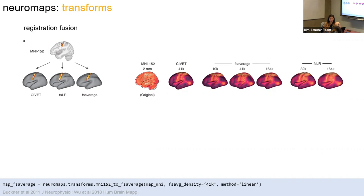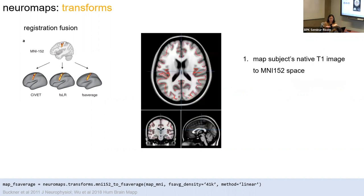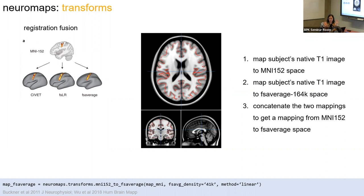To go from volume to surface we use registration fusion, first introduced in Buckner et al. 2011 and expanded in Wu et al. 2018 from Thomas Yeo's group. What they do is map each subject's native T1 image to MNI152 space and then map the same T1 image to FS average — in this case 164,000 vertices per hemisphere — then concatenate those two mappings to get a mapping from MNI152 to FS average. We did this same approach but for FSLR, CIVET, and other densities.